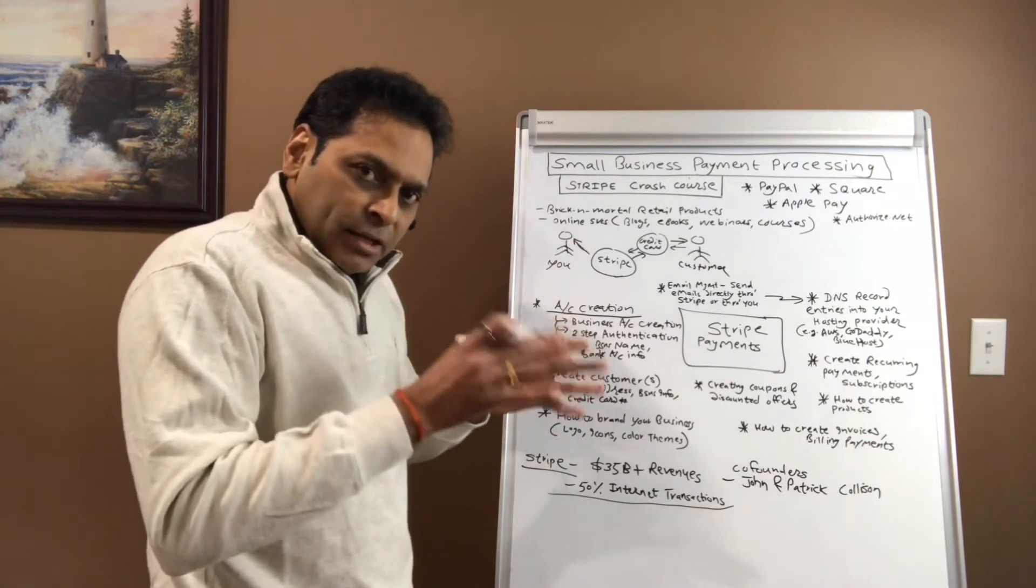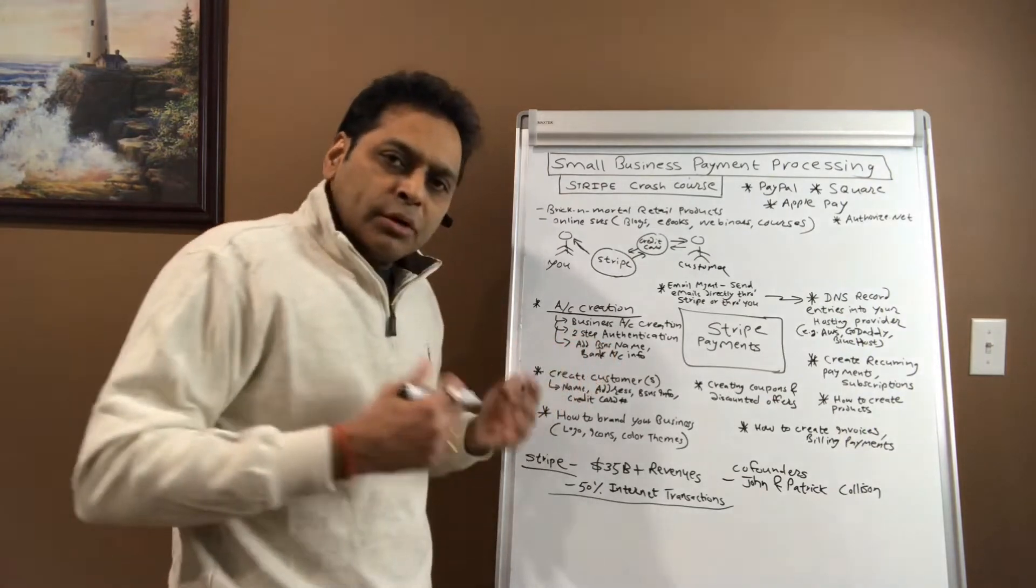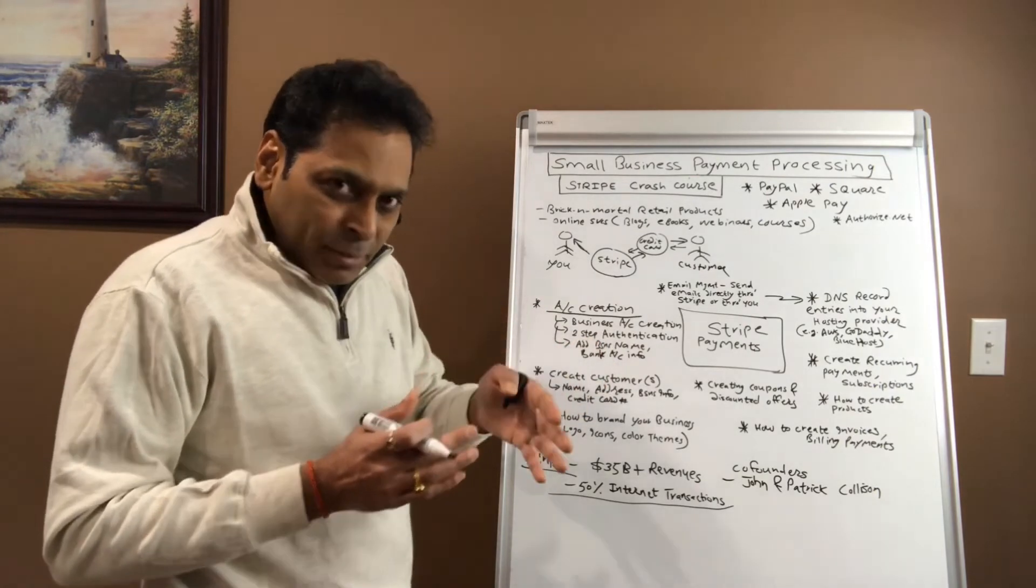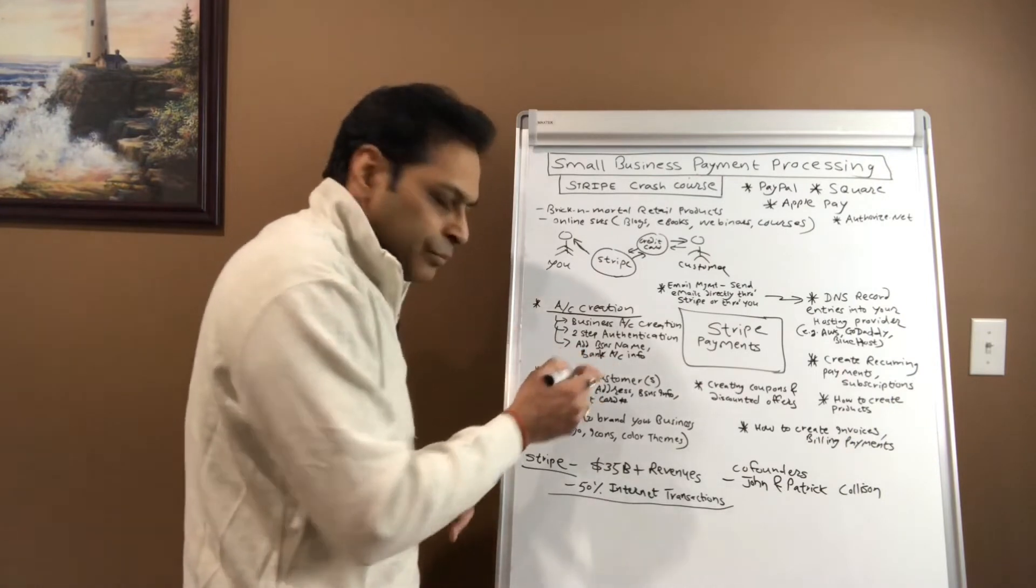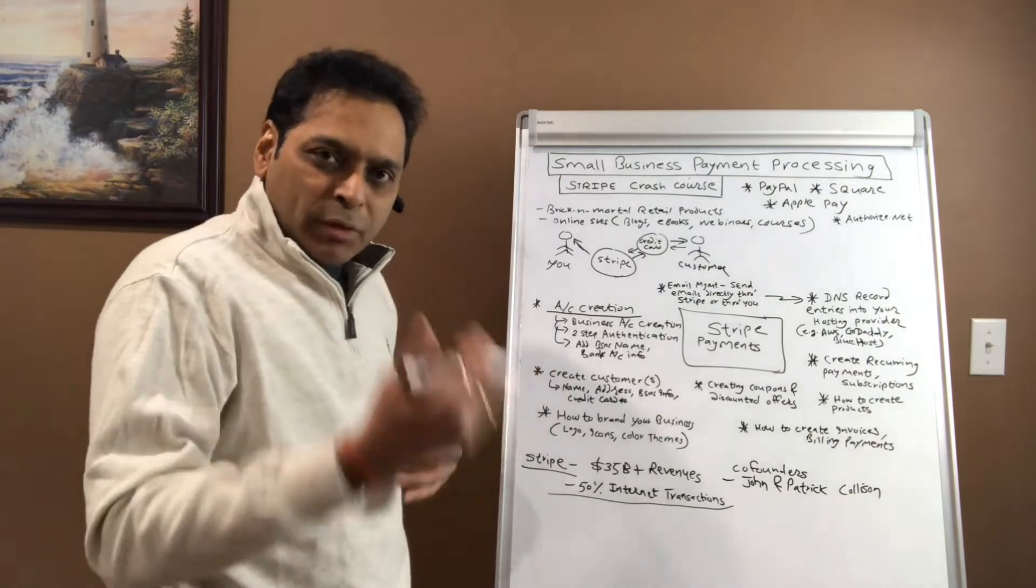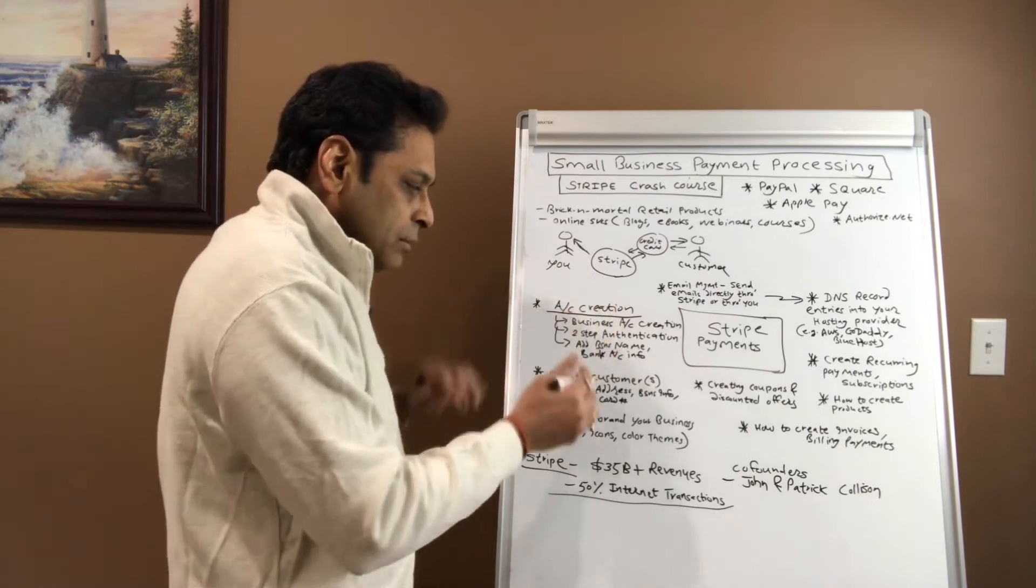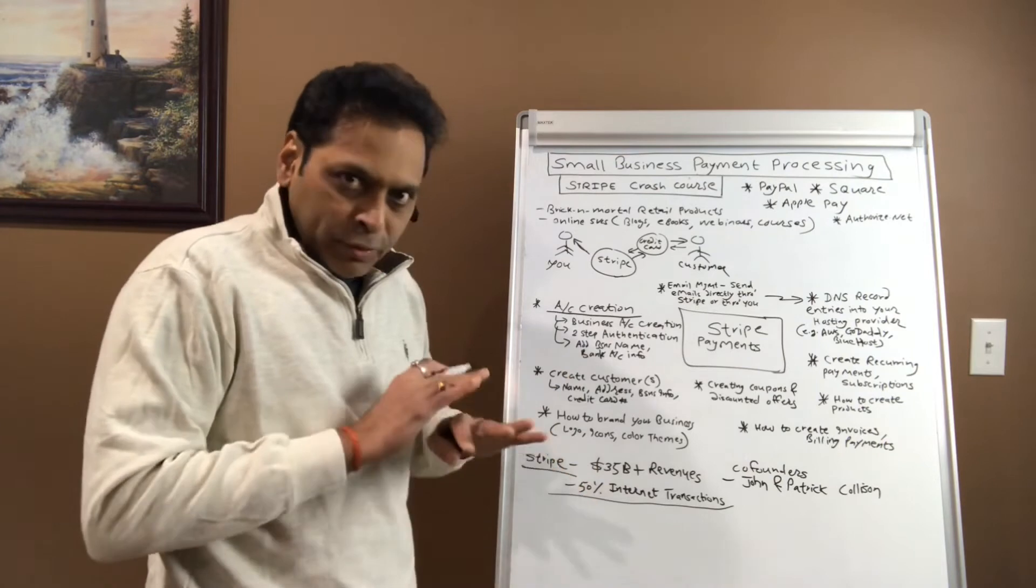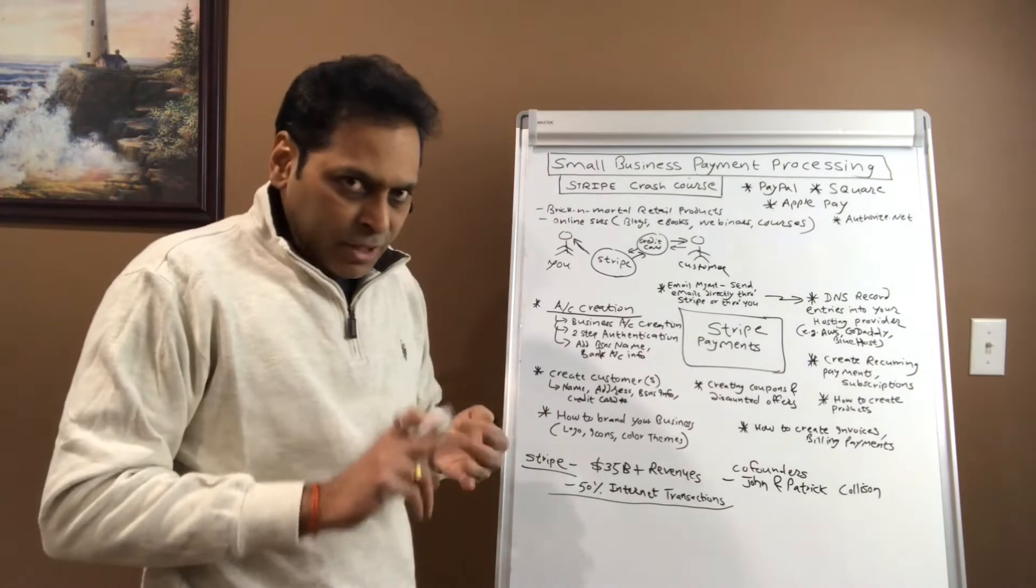Once you create an account, every time you start logging in next time, you'll have to create what is called two-step authentication. You'll have to give them your SMS number and then it becomes your one-time password. When you log in with your user ID and password, they will send you an SMS that becomes your one-time password and then you are in. Once you are in, you can then start creating customers. Customer creation process is also very brief, not a lot of hassles. All you need is their name, address, phone number, and their credit card details.